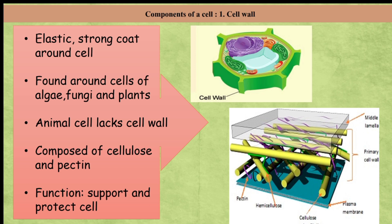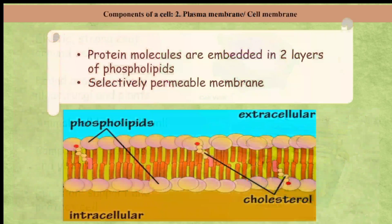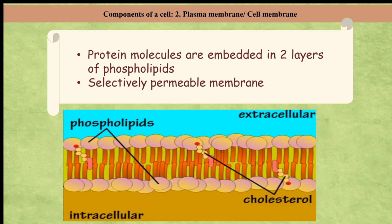Our next component is plasma membrane. The protein molecules are embedded in two layers of phospholipids. Plasma membrane is said to be selectively permeable as it allows some substances to enter the cell while it prevents others. Due to this property, molecules which are useful like water, salt, or oxygen enter the cell, and carbon dioxide exits from the cell.